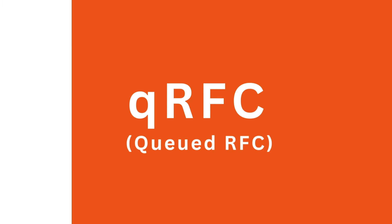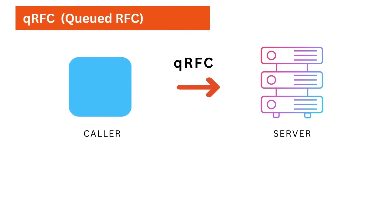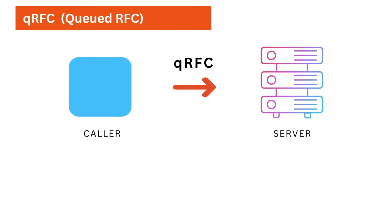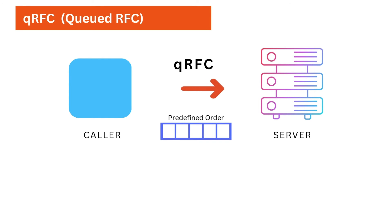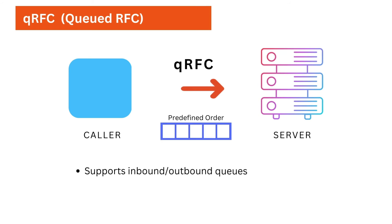The next variant is QRFC, which stands for Queued RFC. For example, if you're building an application and want to make sure that transactions are processed in a predefined order, you should always use QRFC. QRFC is a variant of TRFC, but it uses queues to process the data. We can use both inbound and outbound queues to process and maintain the order.